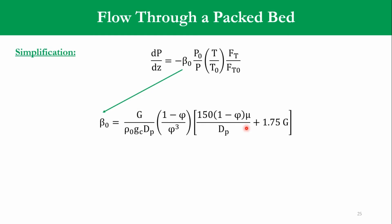Now, that β0 is, as you can see, it is G over ρ0, Gc, Dp, over 1-φ over Ac and that turbulent and laminar relationship. The β0 units are kilopascal per meter, or atm per feet, pressure per length.